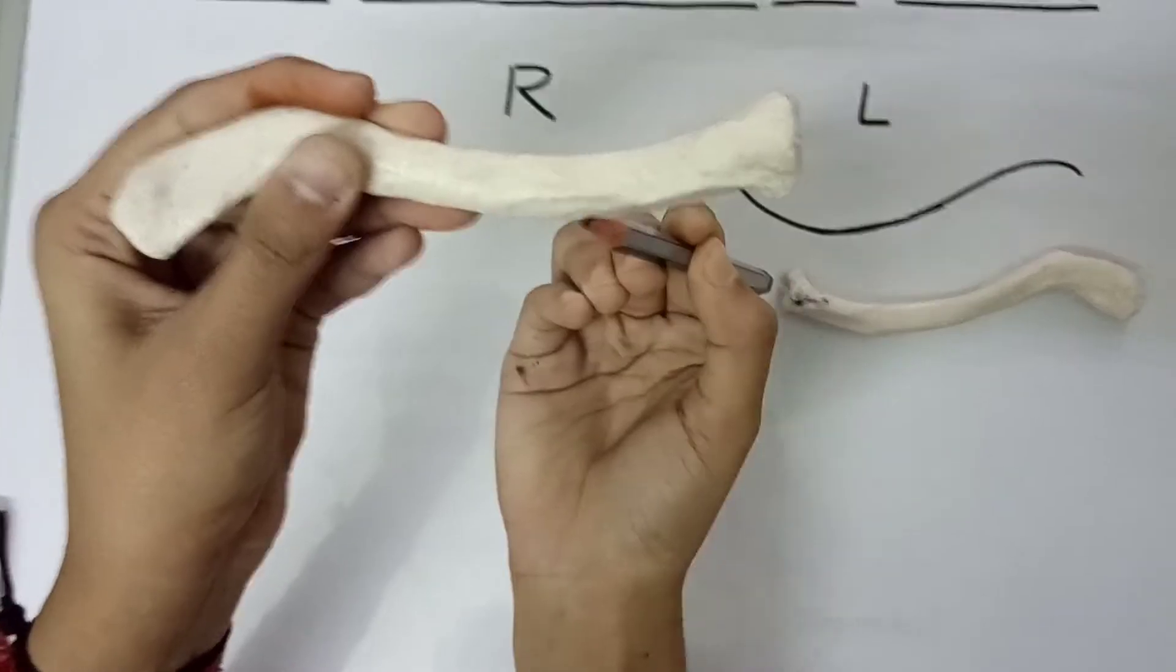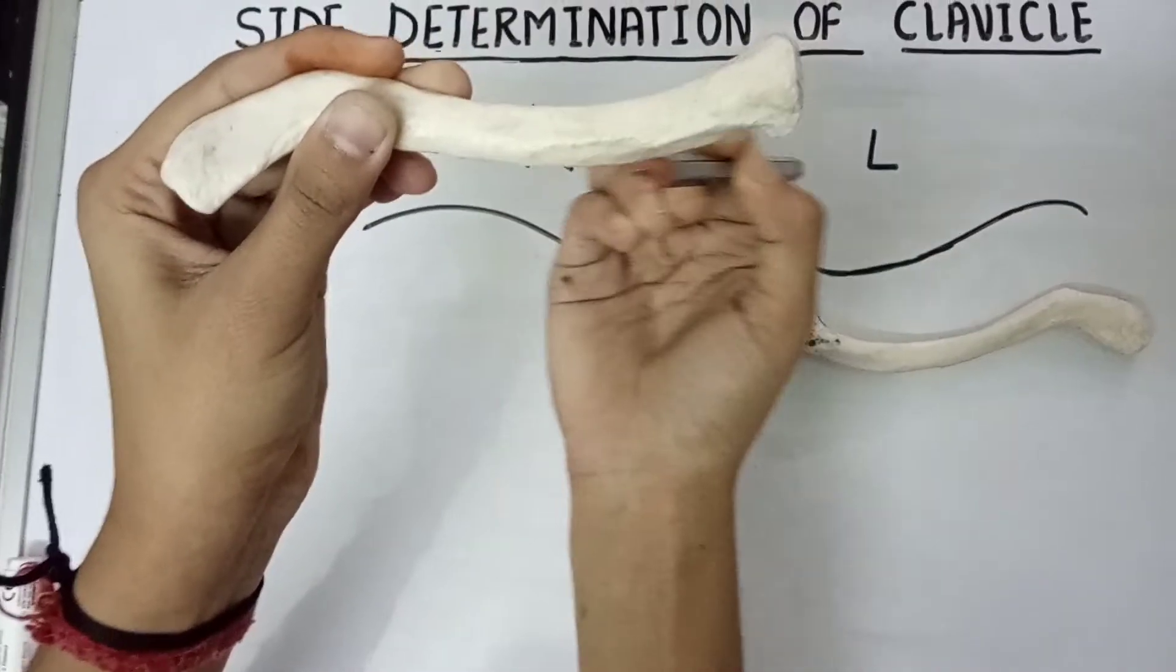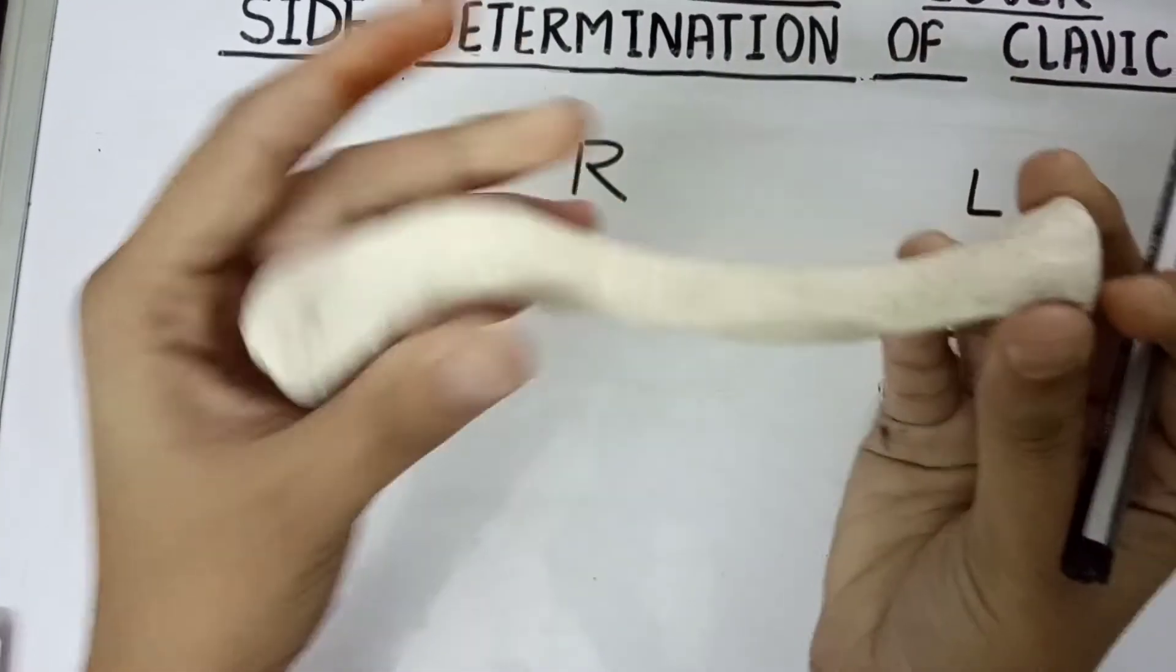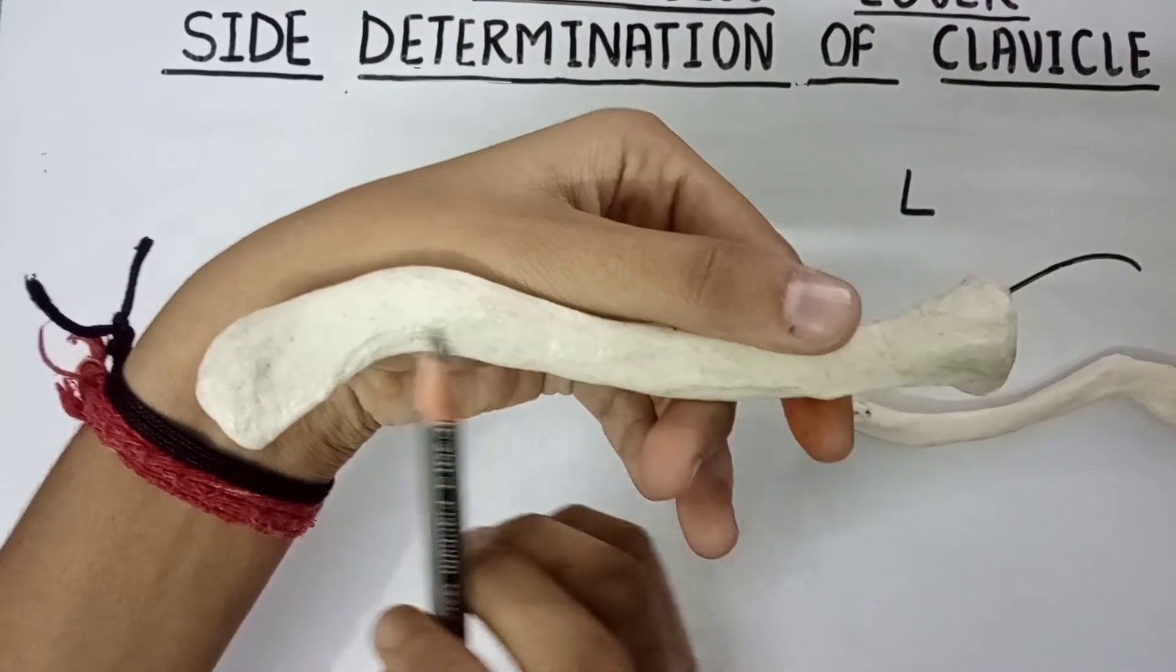The lateral one-third of the shaft is concave anteriorly.